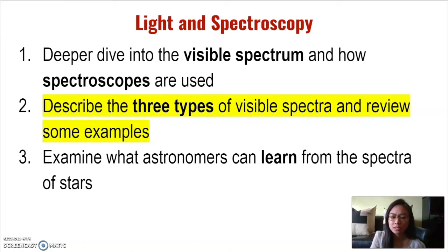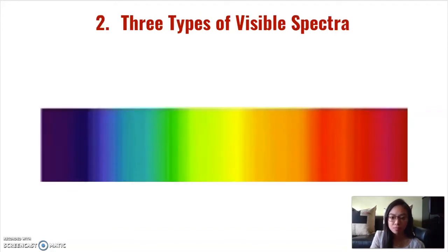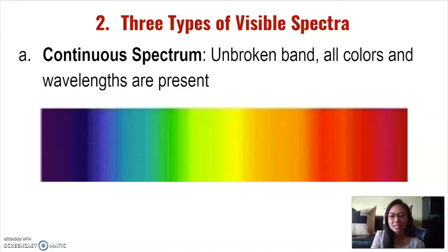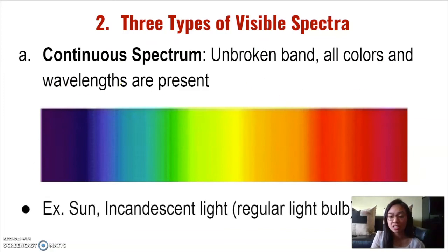So what can spectroscopes show us? Spectroscopes show us the spectra of light. There are three types of visible spectra. The first type is called a continuous spectrum — an unbroken band that includes all colors and wavelengths. A light with a continuous spectrum results in a spectra showing all colors of the ROYGBIV rainbow. Some examples of lights with a continuous spectrum are the sun and incandescent light bulbs.